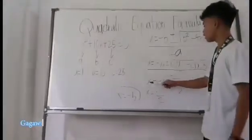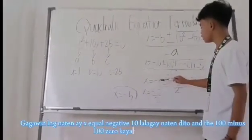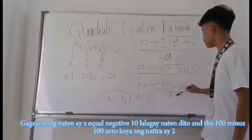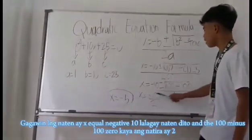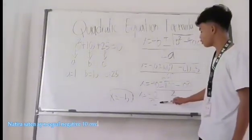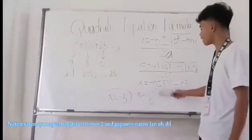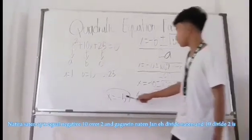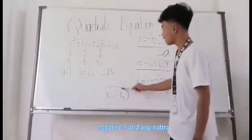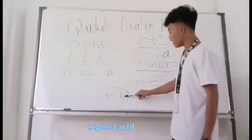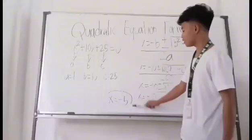What we do next is x equals negative 10. We'll substitute here, 100 minus 100 is 0. So what remains is 2. So what remains is x equals negative 10 over 2. What we do is divide it. 10 divided by 2 is negative 5. And what remains is x equals negative 5, and that's the answer.